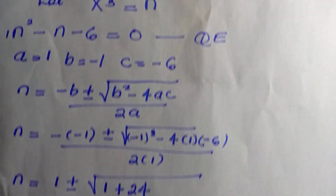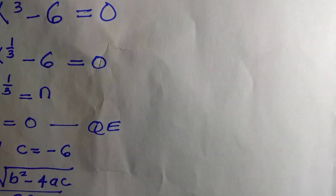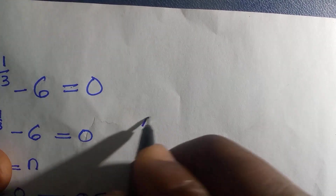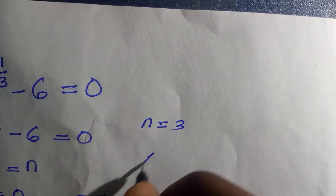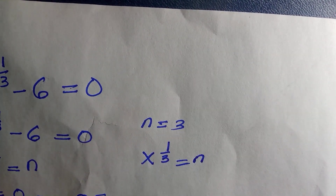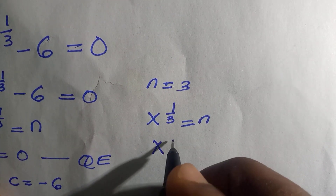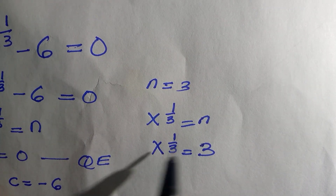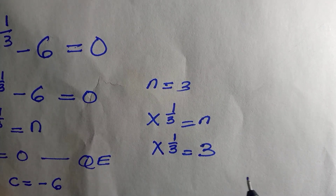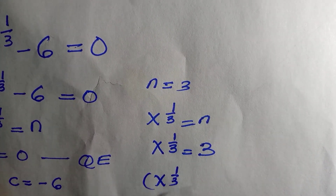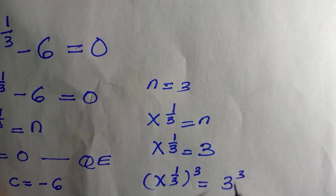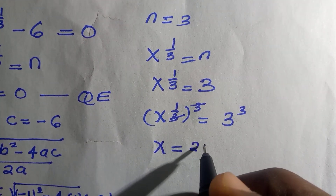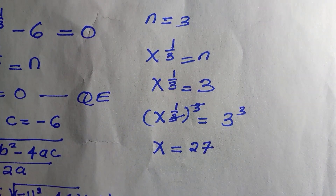Since it's a quadratic we must get two values. Recall that we let x to the power of one-third equal n. At n equals three, we substitute back: x to the power of one-third equals three. To solve for x, we cube both sides, giving x equals three cubed, which is twenty-seven. That is three multiplied by three multiplied by three, which equals twenty-seven. This is the first value of x.